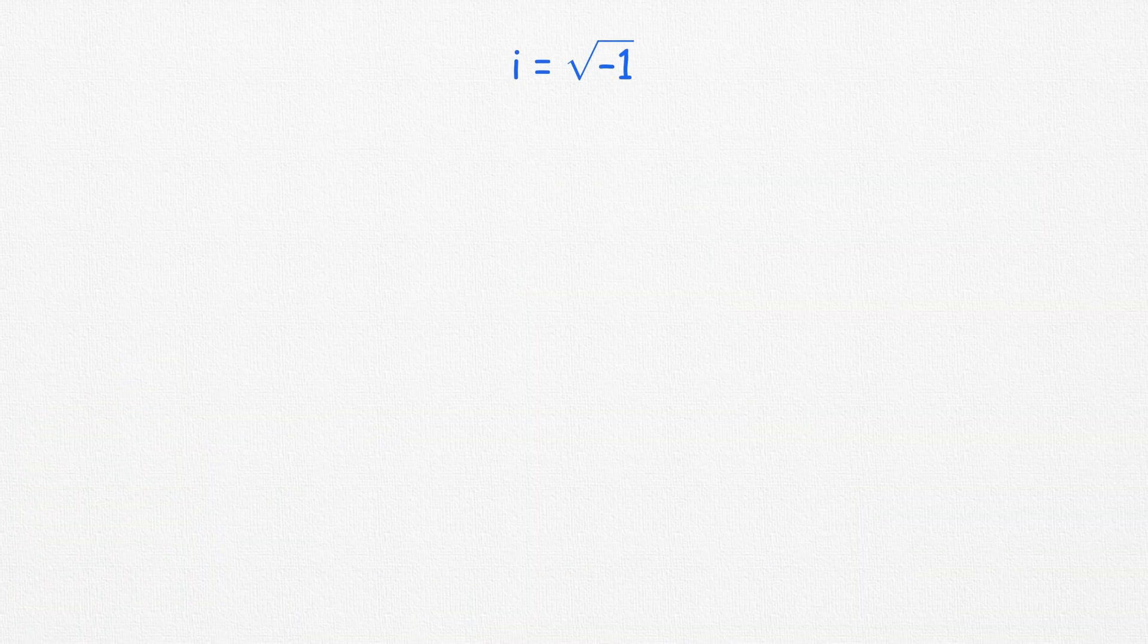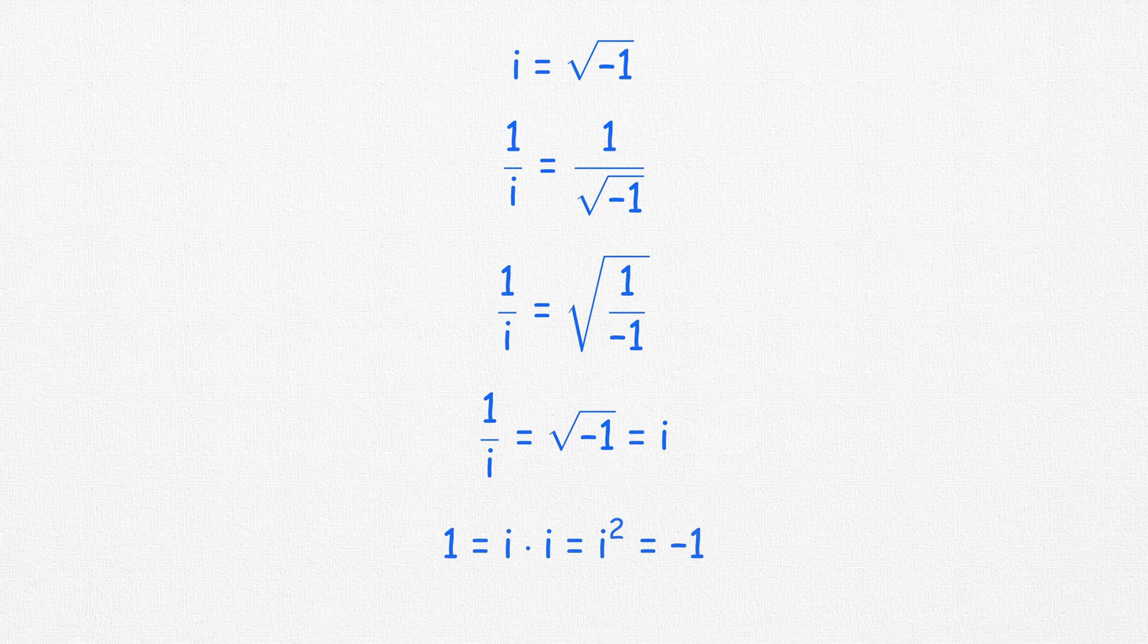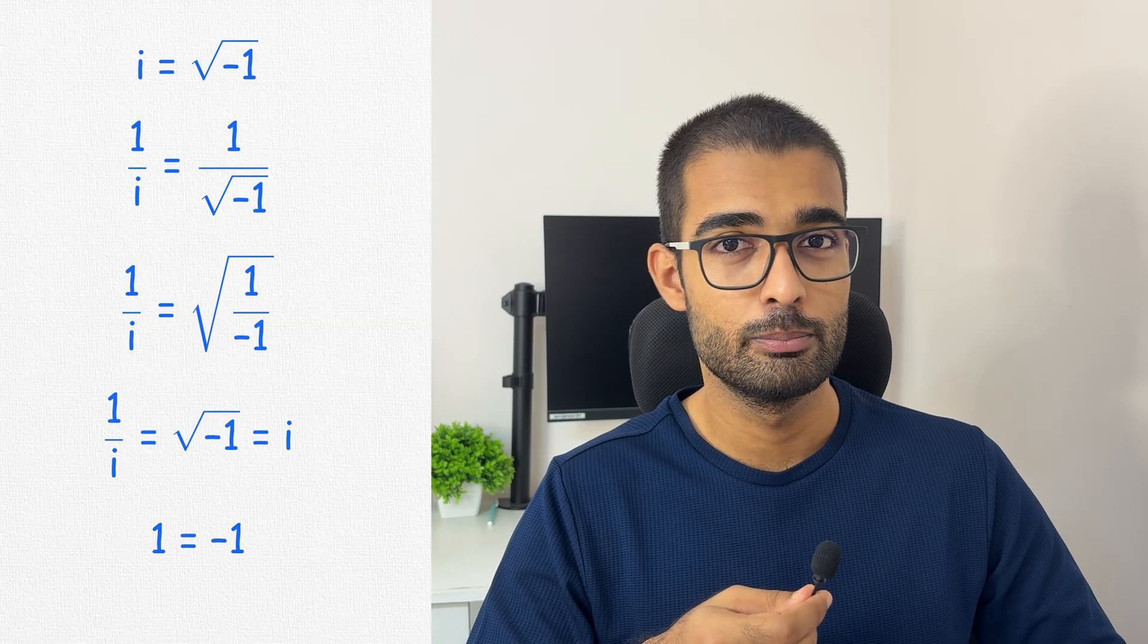Let's start from i equals root over minus 1. Just inverting the numbers, also known as invertendo, and taking a common square root for 1 and minus 1, we get i squared equals 1, which means minus 1 equals 1.